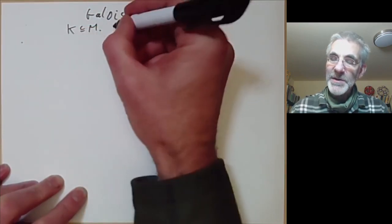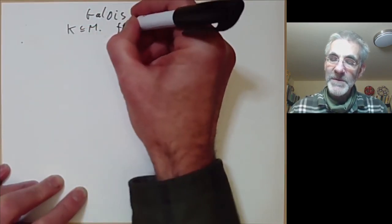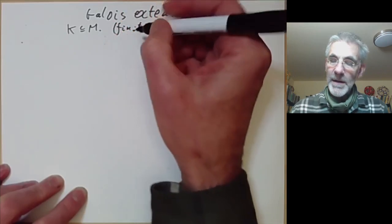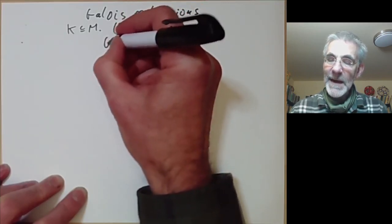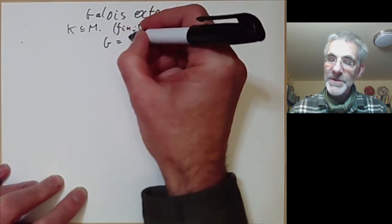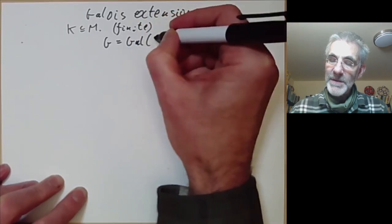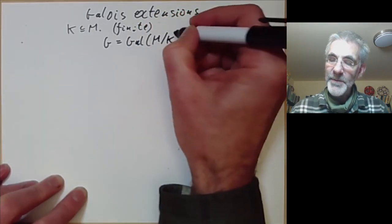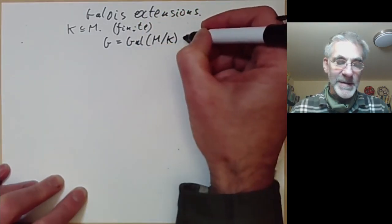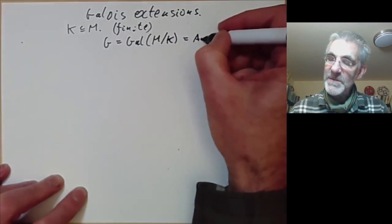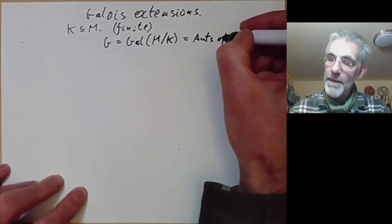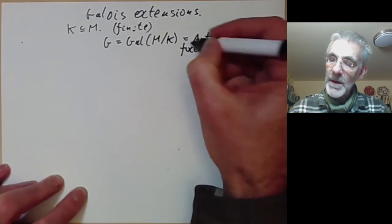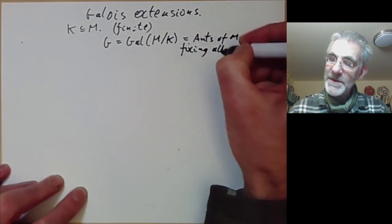Suppose you've got a finite extension of fields. We can define the Galois group, denoted G — the Galois group of the extension M over K — which is equal to the automorphisms of M fixing all elements of K.